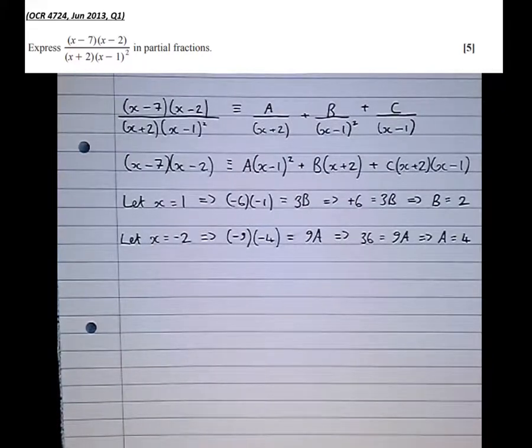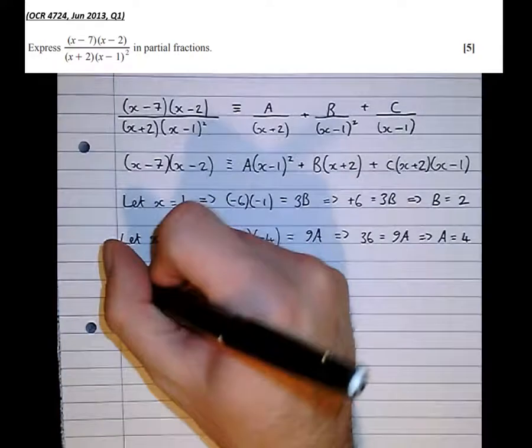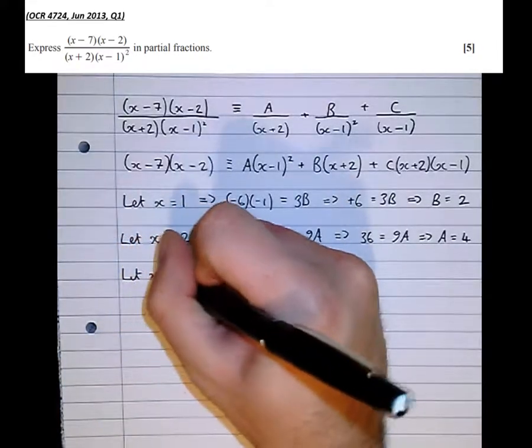But unfortunately, at this point, it becomes apparent that we've run out of tactical values to sub in. So the next best value we can use, really, I think, in my opinion, the next easiest one is 0.